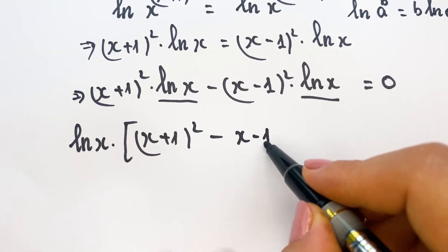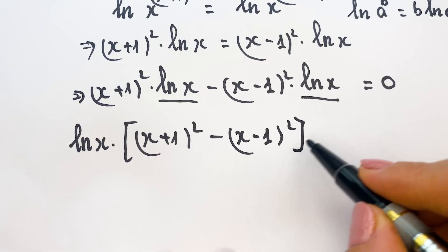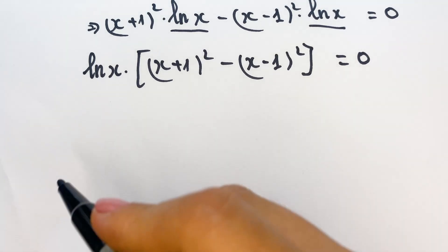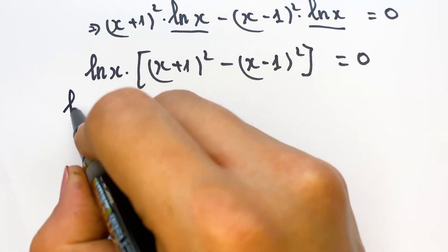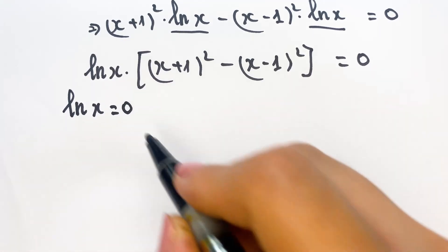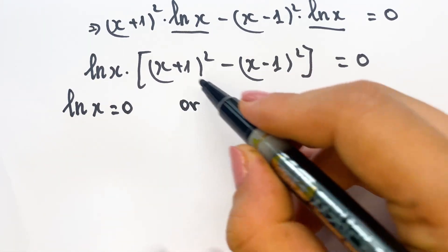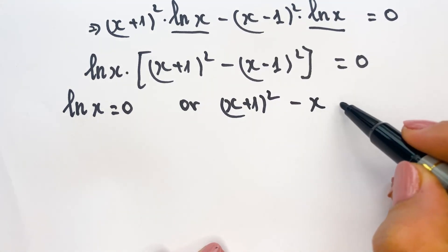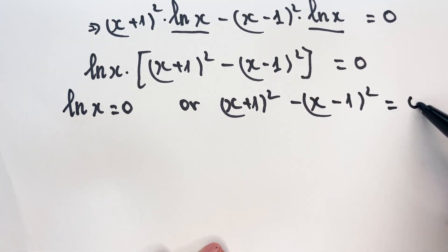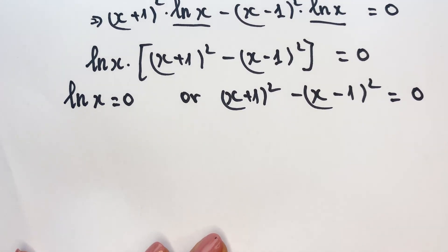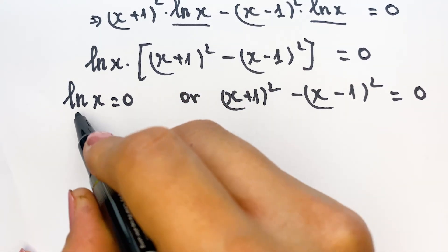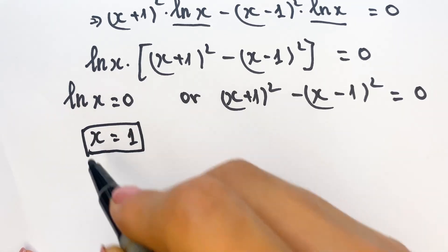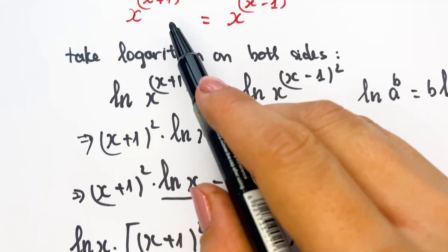So we have two equations. Firstly, logarithm of x equals zero, which gives us x equals 1 — that is the first solution of the equation. Secondly, (x+1)² minus (x-1)² equals zero.